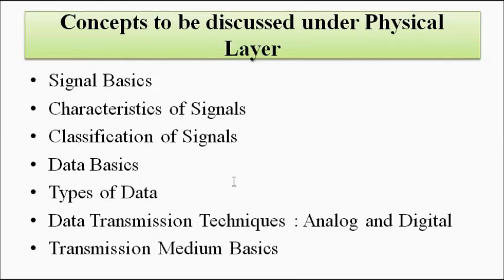The concepts to be covered under the physical layer include: basic concepts related to signals such as analog, discrete-time, and digital signals, analog-to-digital conversion, and characteristic features of signals; basic concepts related to data transmission; analog and digital transmission mediums; various types of transmission media such as copper cables, twisted pair cables, coaxial cables, and optical fiber; and transmission modes like simplex, half-duplex, and full-duplex.